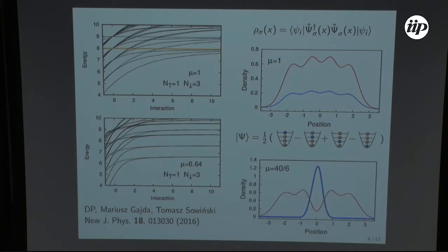However the property of this mass imbalance system, the general property is that these lowest states they have always the spatial separation. So the heavy particles are in the middle and the lighter are pulled apart even if I would have three heavy particles, it does not depend on the number of particles.